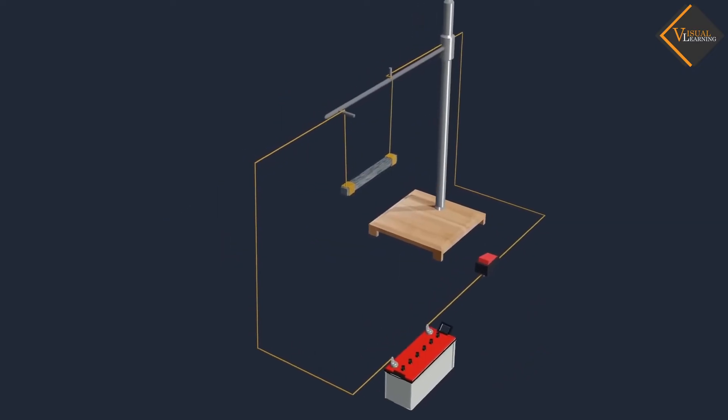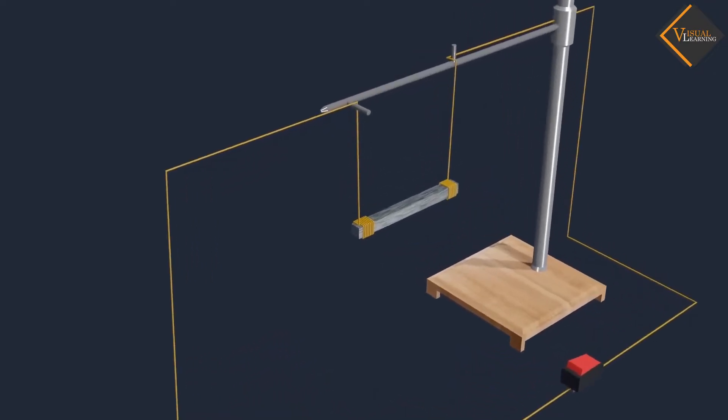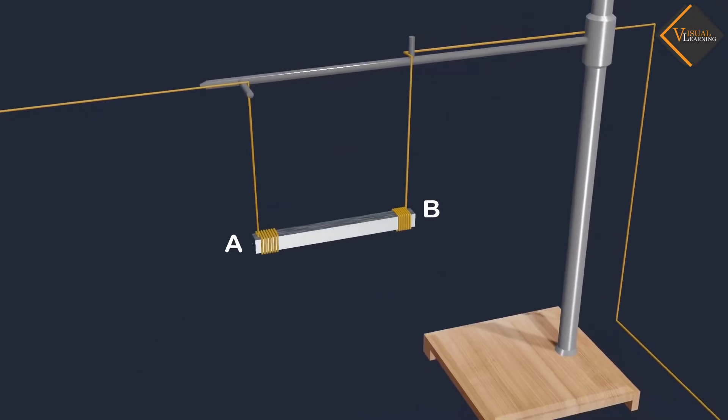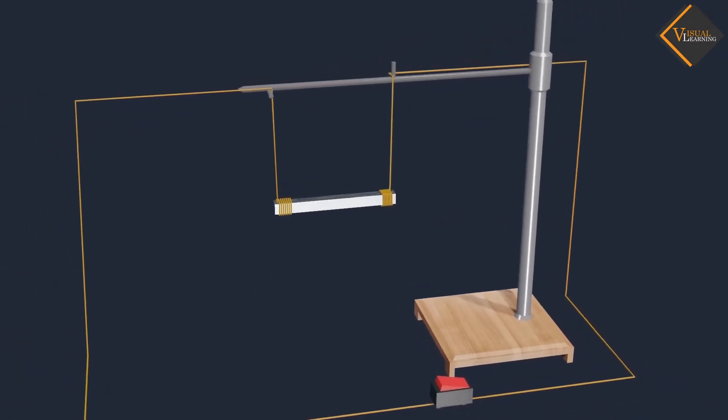Now, let us consider a small aluminium rod, AB. This aluminium rod is suspended horizontally from a stand using two connecting wires.